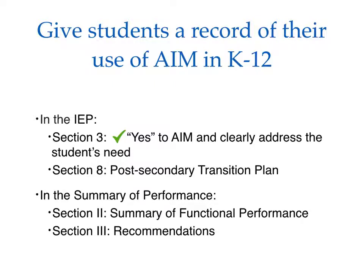Section 8 of the IEP, Post-secondary Transition Plan, is required once a student reaches 9th grade or turns age 16, whichever comes first. In this section, include AIM in the Description of Transition Services. The Summary of Performance, also required under IDEA 04, is another important form for documenting a student's need for AIM. The two most relevant sections are Section 2, Summary of Functional Performance, and Section 3, Recommendations to assist the student in meeting post-secondary goals.